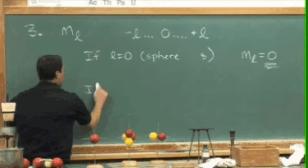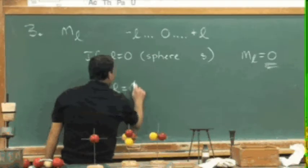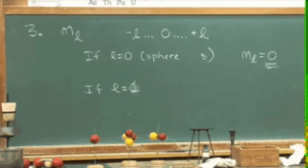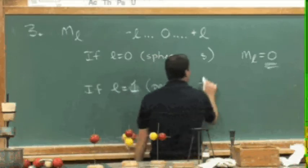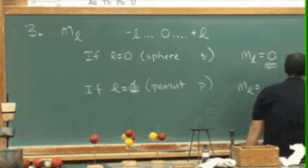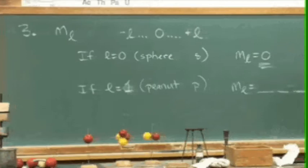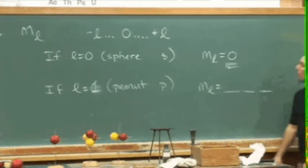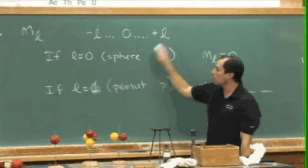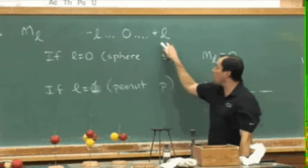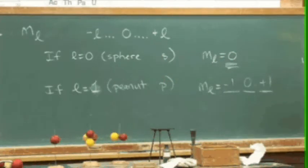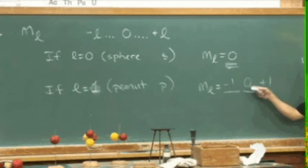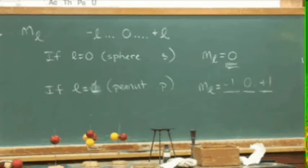When l is equal to one, we have ourselves the peanut, known as the p orbital. And there are three values for m sub l. m sub l goes from negative l to positive l, so it goes from negative one to positive one with all things in between, the zero. So what we have is negative l, positive l, these are ones, so the zero is in between. We have three occurrences, which is telling us that we have three of the peanut orbitals.